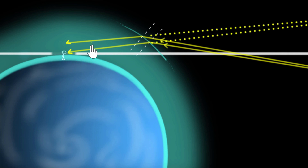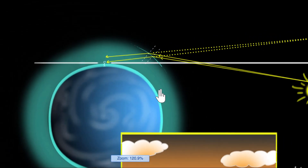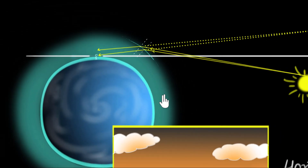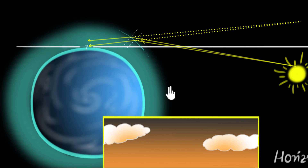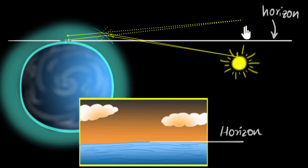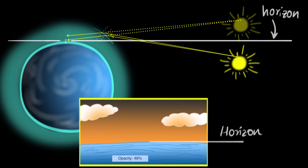So it appears to us as if these rays of light are coming from — let's zoom out — somewhere over here. And as a result, we will feel as if the top of the sun is somewhere over here, and we will see that sun somewhere over there.